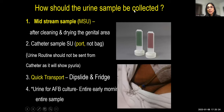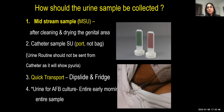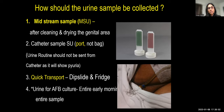For urine samples, always use midstream collection after cleaning and drying the genital area. For catheterized ICU patients, use the catheter's separate sampling port — never open the closed system. Transport to the lab quickly. Dip slides can also be used — inoculation and incubation start immediately upon use.